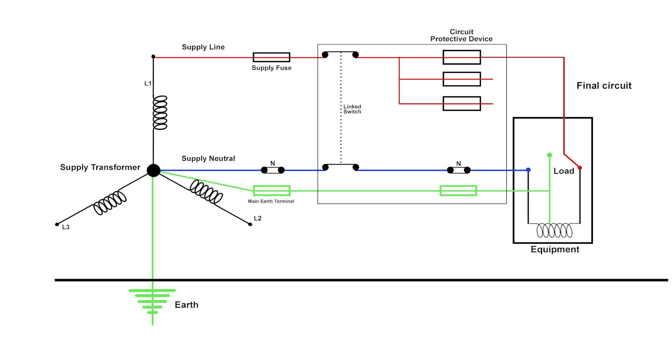As I said before, this is a TNS system and the earth is completely separate throughout the whole of the system. The earthing system is there to protect us if there's a problem and we have a fault.